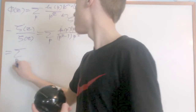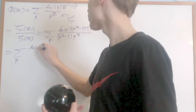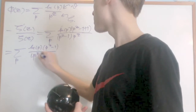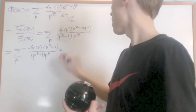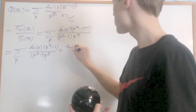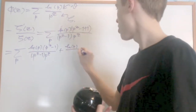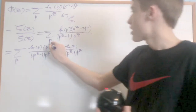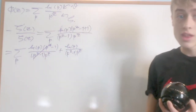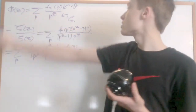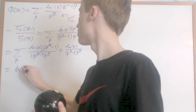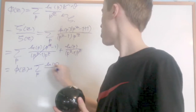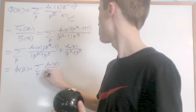This gives the sum for all primes p of natural log of p distributed in: p to the z minus 1 over p to the z minus 1 times p to the z, plus natural log of p over p to the z minus 1 times p to the z. The first piece cancels, leaving natural log of p over p to the z, which is just φ(z). So −ζ'(z)/ζ(z) equals φ(z) plus the sum over p of natural log of p over p to the z times p to the z minus 1.